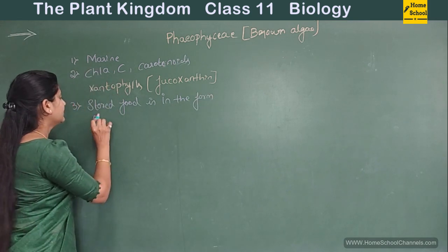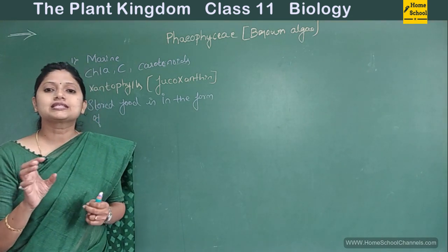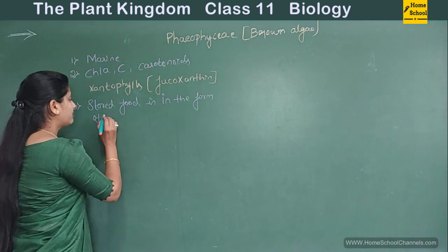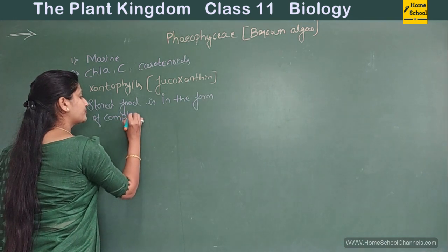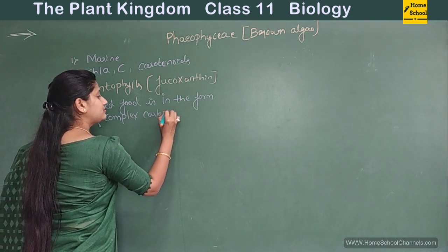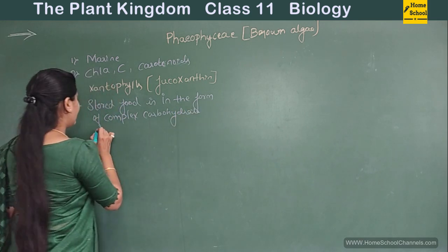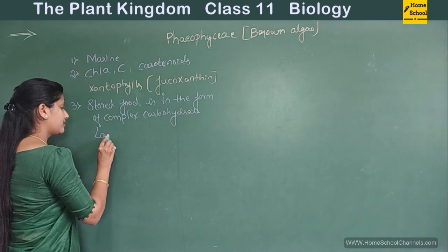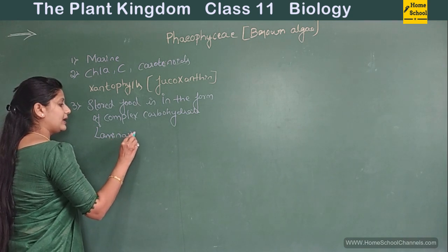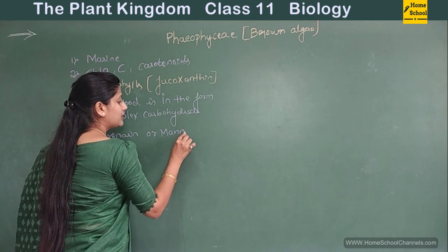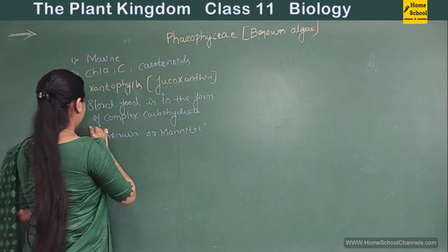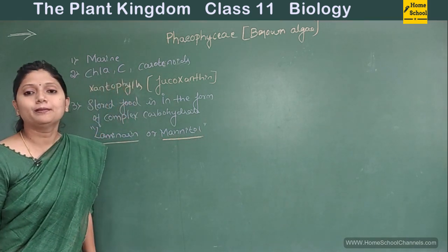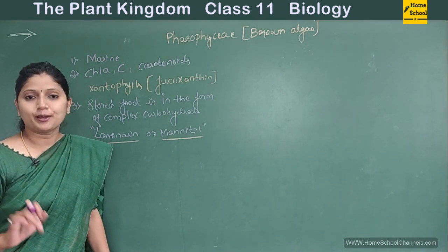The third characteristic is about stored food. Stored food is in the form of a very complex carbohydrate which is called as laminarin or mannitol. So the stored food is in the form of laminarin or mannitol in case of the Phaeophyceae members.